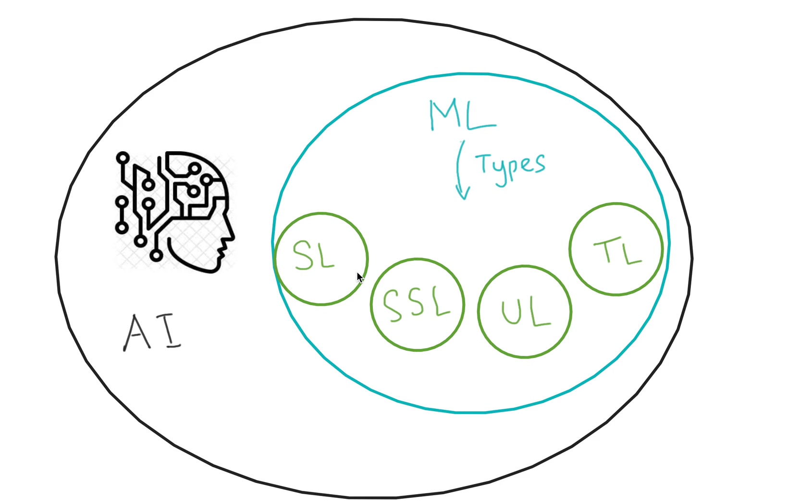SL stands for supervised learning. SSL stands for semi-supervised learning. UL stands for unsupervised learning and TL stands for transfer learning. These are four very common types of learning within machine learning and we will talk about supervised learning today.